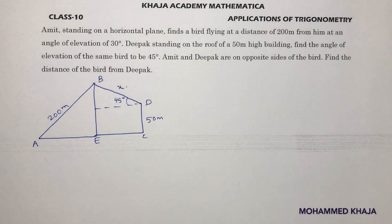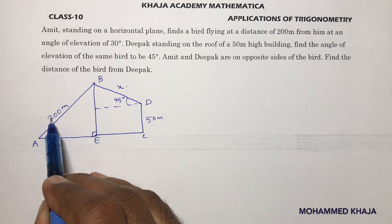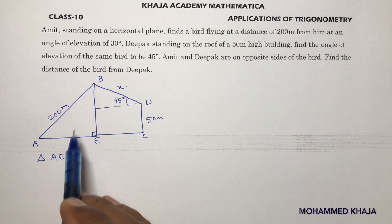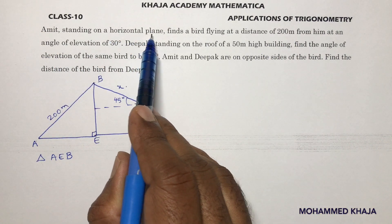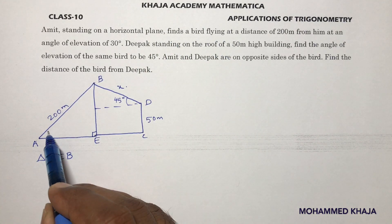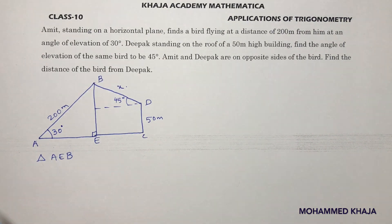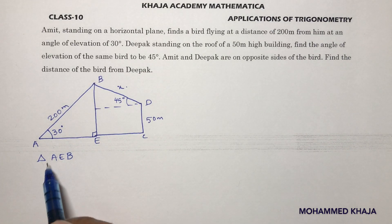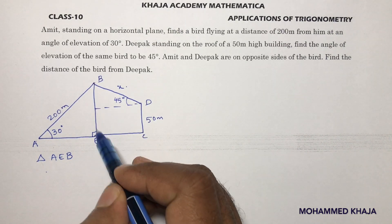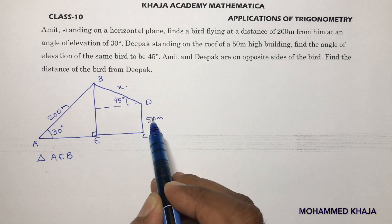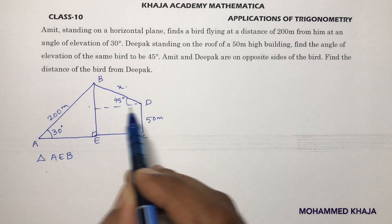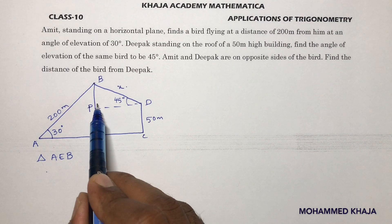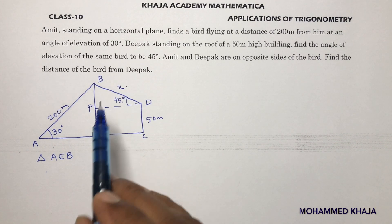With the help of triangle AEB, we are told Amit is standing on the horizontal plane and finds the bird at a distance of 200 meters at an angle of elevation of 30 degrees. Using 30 degrees and 200 meters, we'll find BE. Then after getting the value of BE, since PE is 50, we'll calculate BP. With BP and the angle, we'll find the value of X.